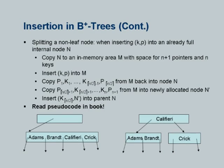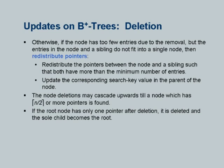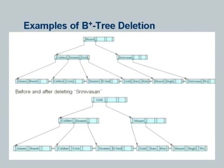Regarding deletion: where insertion causes splits, deletion causes merges. When a node goes under half-full, you try to merge with a sibling. If you cannot merge because the sibling is full, a new operation called redistribution or borrowing of values from a sibling is needed. There are also examples in the slides and book showing the height of the tree shrinking. For lack of time, most of these details will be skipped but one example will be shown: deleting Srinivasan from the tree.